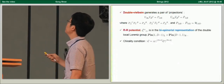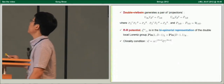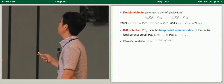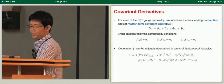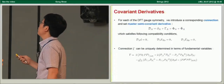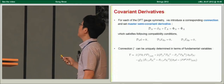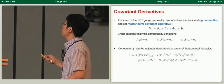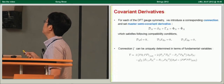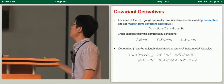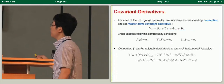Since we are considering double field vielbeins, a double local Lorentz transformation naturally arises. As in Riemannian geometry, the double vielbein generates a pair of projections, and they are related to the generalized metric. The R-R potential can be realized as the bi-spinorial representation of the local Lorentz group, satisfying the correct conditions. For each double field theory gauge symmetry, we introduce the corresponding connection and master the semi-covariant derivative. The connection can be uniquely determined by additional torsion-free and projectivity conditions.